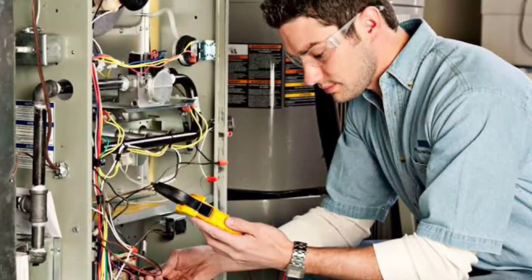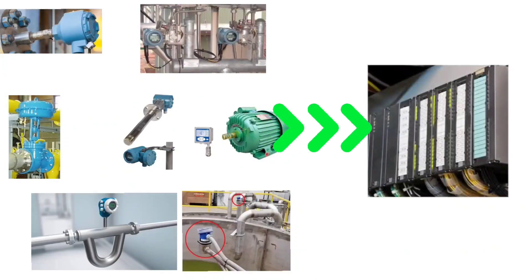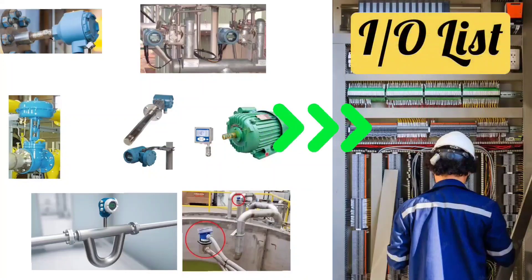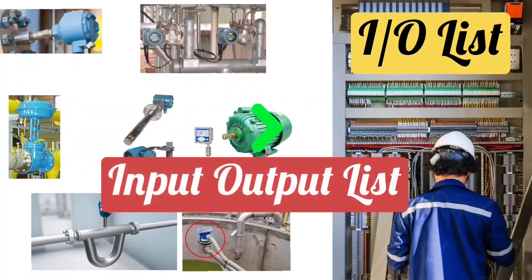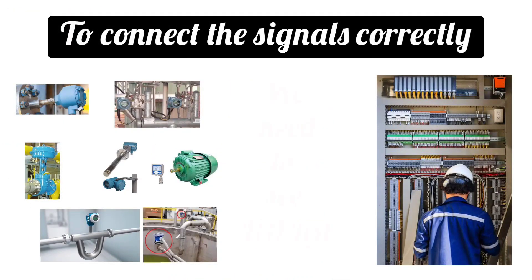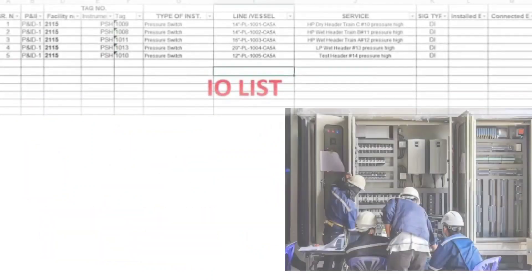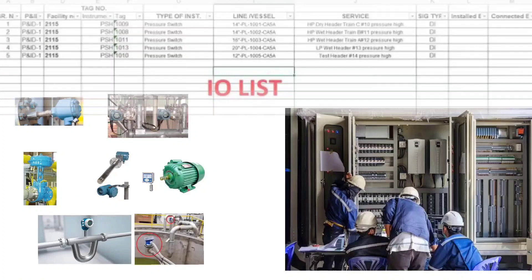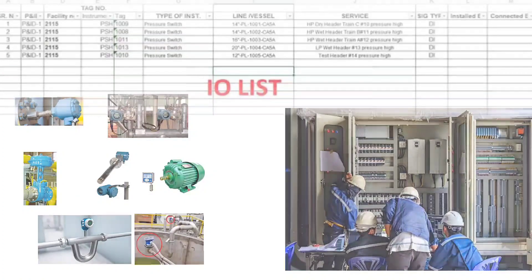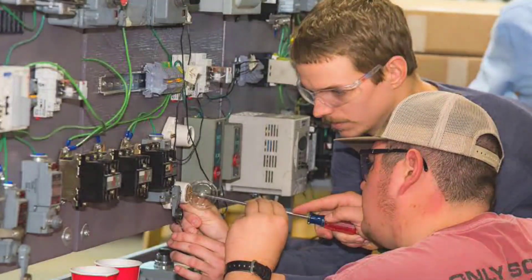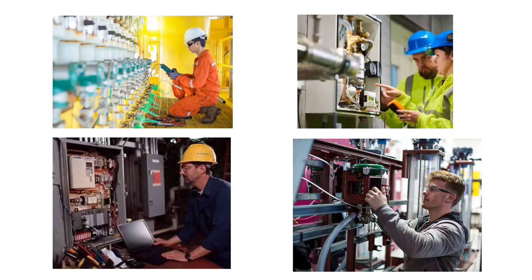All these signals are properly connected. To connect signals at the right place, an I/O list is required. This I/O list is called the input-output list. To connect the signals correctly, we need to see the input-output list. From this list, you get to know which instrument is connected where in the PLC panel. By commissioning, you know how to connect the instruments properly.